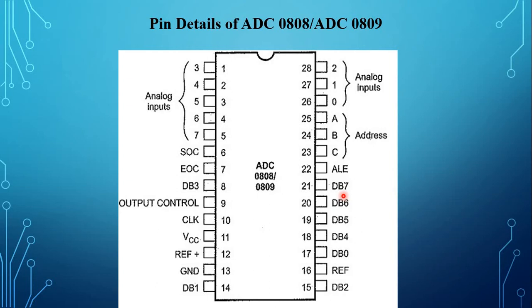For logical one, input voltage minimum is Vcc minus 1.5 volts. For logical zero, input voltage maximum is 1.5 volts. Logical one output voltage minimum is Vcc minus 0.4 volts. Logical zero output voltage minimum is 0.45 volts.